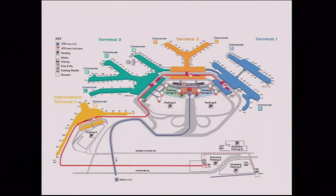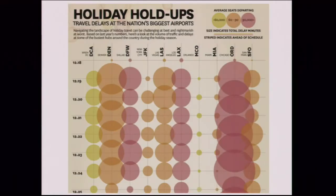Over here, we understand that this is a data visualization of a place we've all been to — an airport. This one happens to be Chicago Airport. This visualization may help us in getting around the airport, but maybe it's also a cause of delays, which is described in this next data visualization: travel delays at the nation's biggest airports, where all those large red circles on the right happen to be related to Chicago.